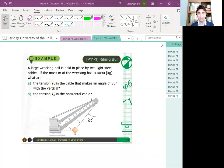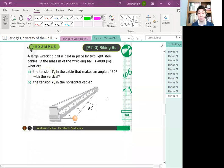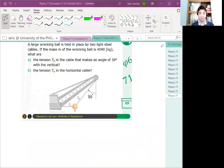Two minutes have elapsed. Let's solve this problem. You have a large wrecking ball in place by two light steel cables. If the mass of the wrecking ball is 4,090 kilograms, letter A, what's the tension TB, and what's the tension TA? So, we have a diagram already. So, may mistakes ka ata. Check your angles.